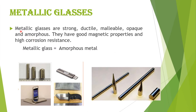Metallic glasses are strong, ductile, malleable, opaque, and amorphous. They have good bonding properties and high corrosion resistance. Metallic glasses can simply be described as an amorphous metal.